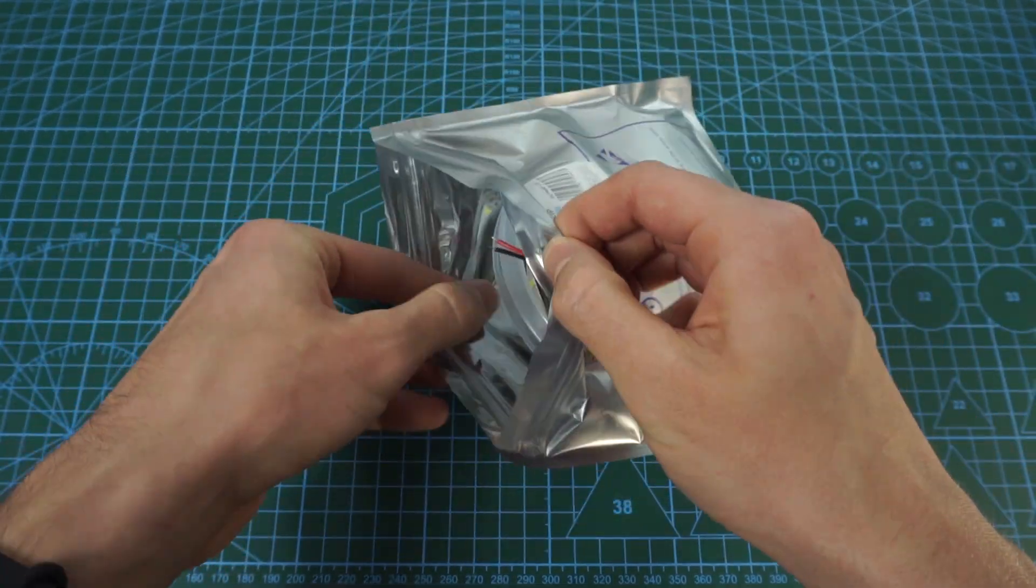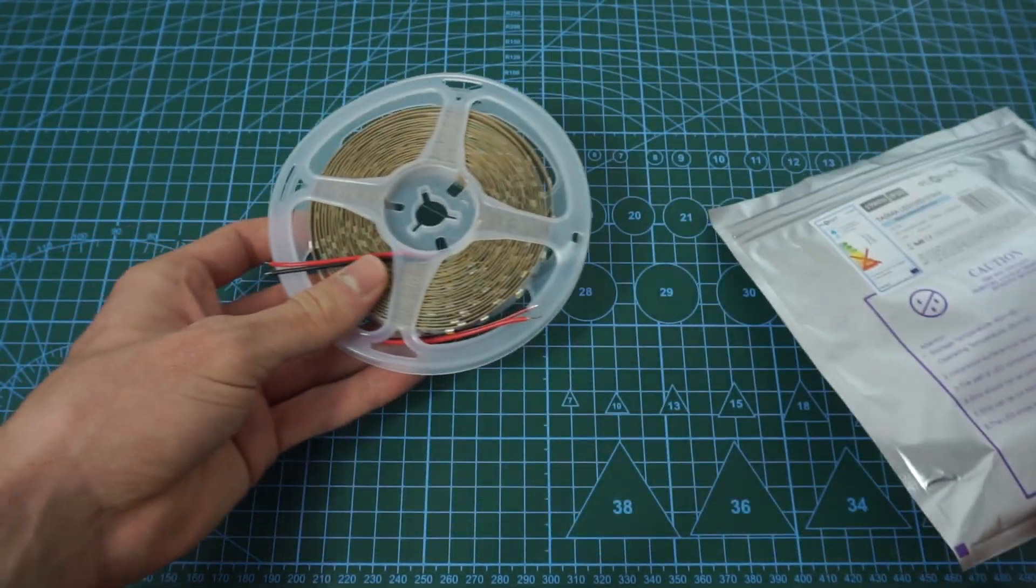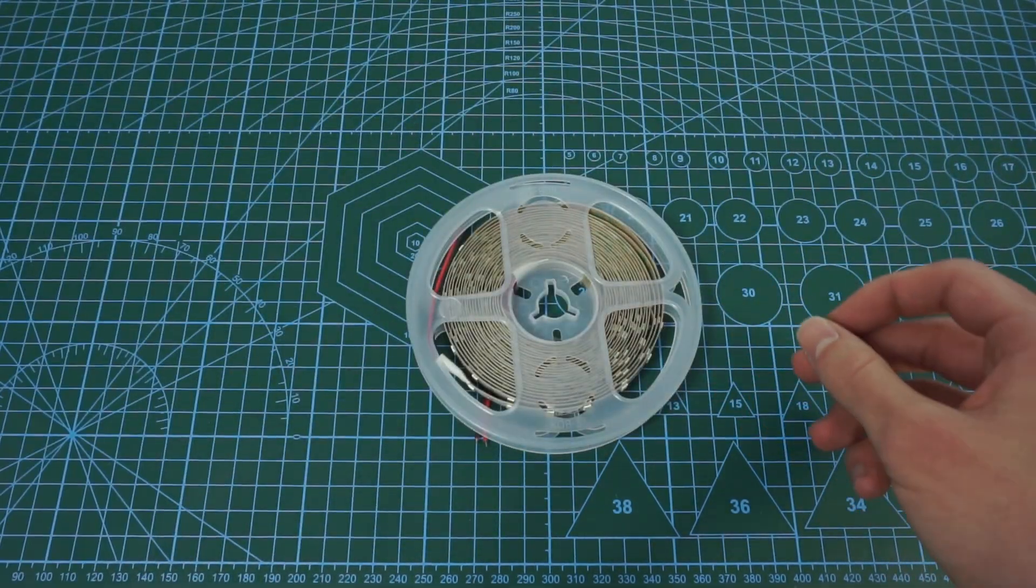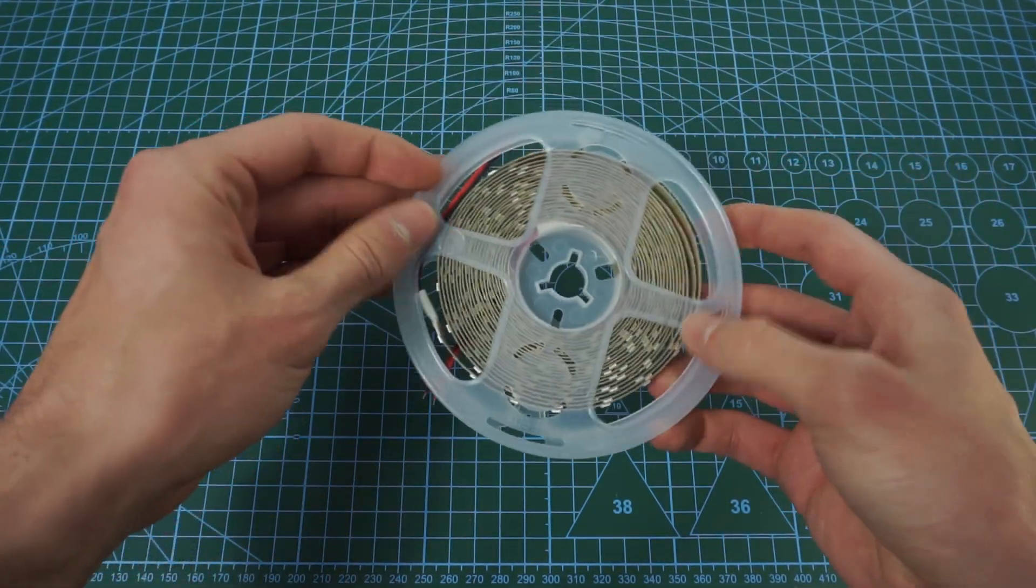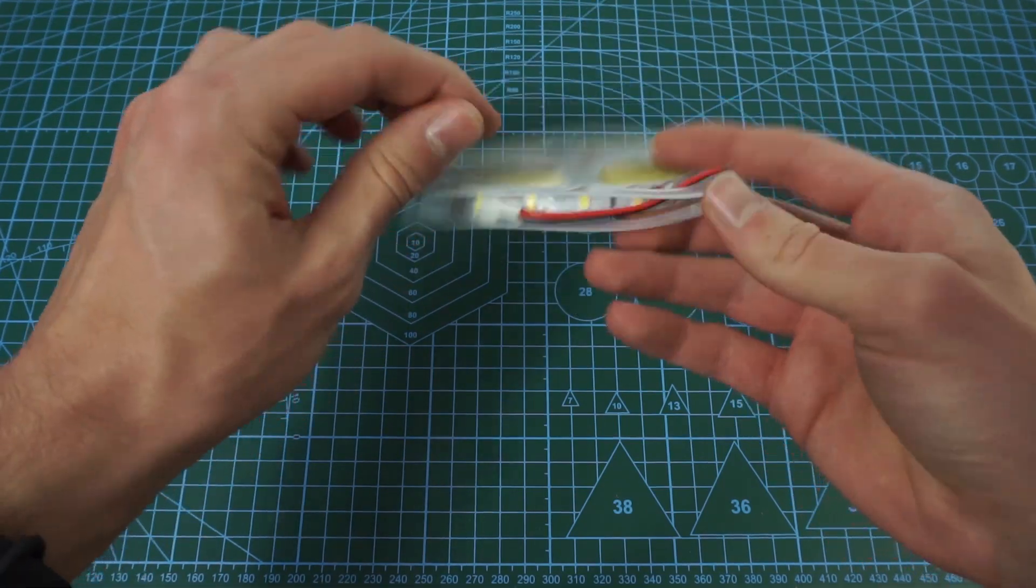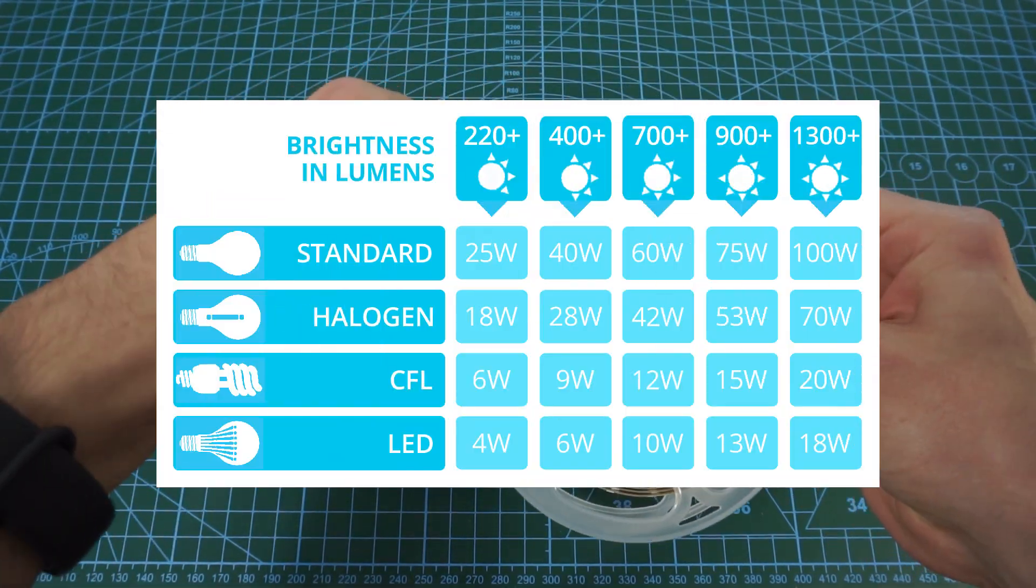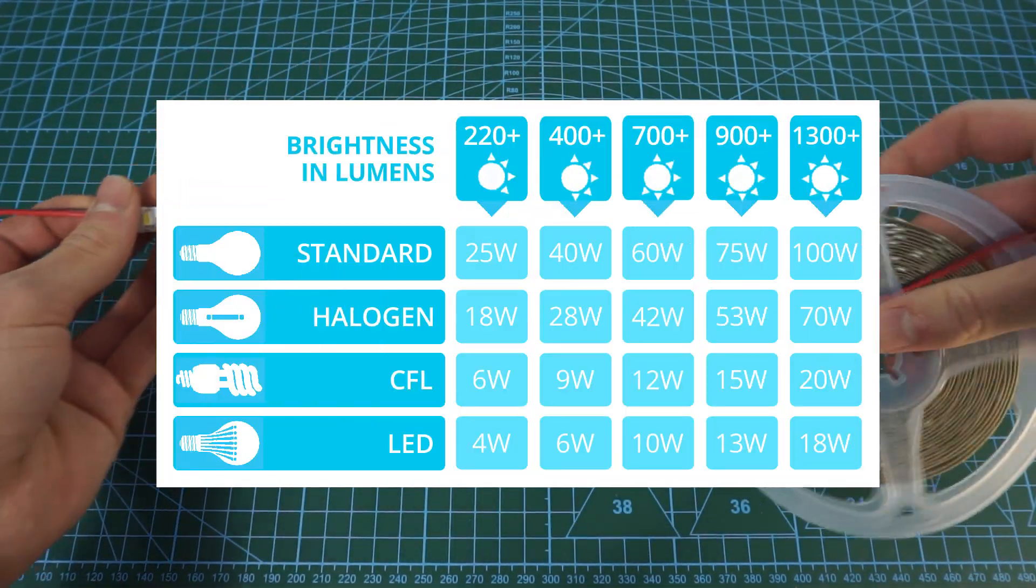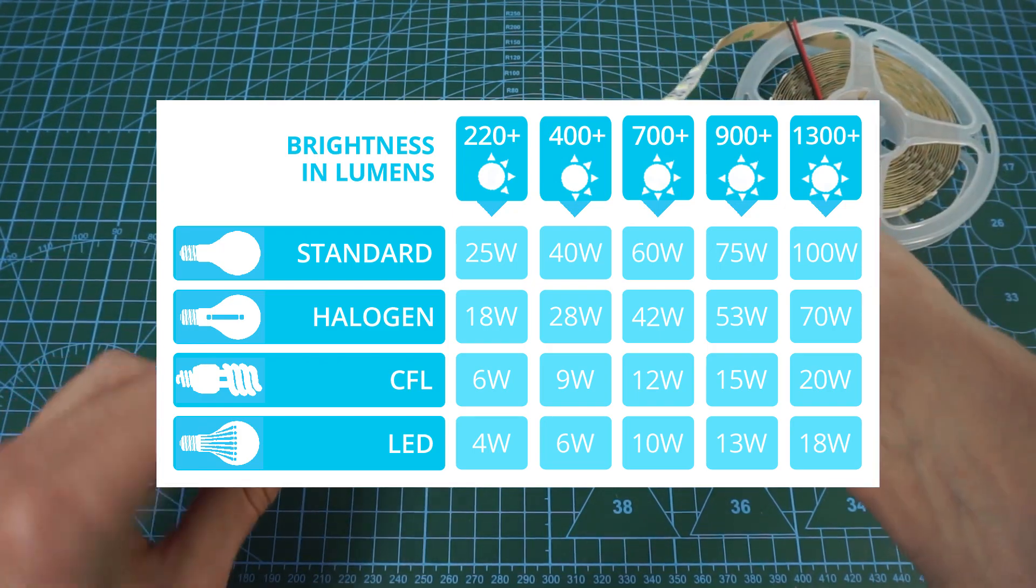Right, so here's my first pull: cold white SMD5630 5-meter strip. It's rated at 19 watts and 1550 lumens per meter, which in terms of brightness is comparable to a 100-watt light bulb. Pretty efficient if you ask me.